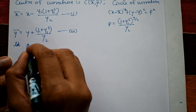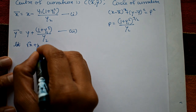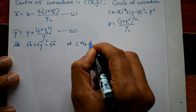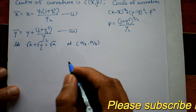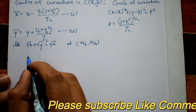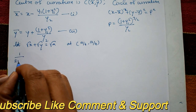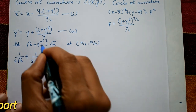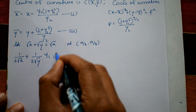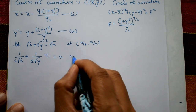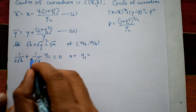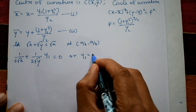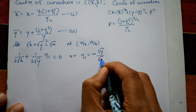Given curve: √x + √y = √a at point (a/4, a/4). Differentiating this equation we get 1/(2√x) + 1/(2√y) · y1 = 0. Shifting to the right-hand side, y1 = −√y / √x.